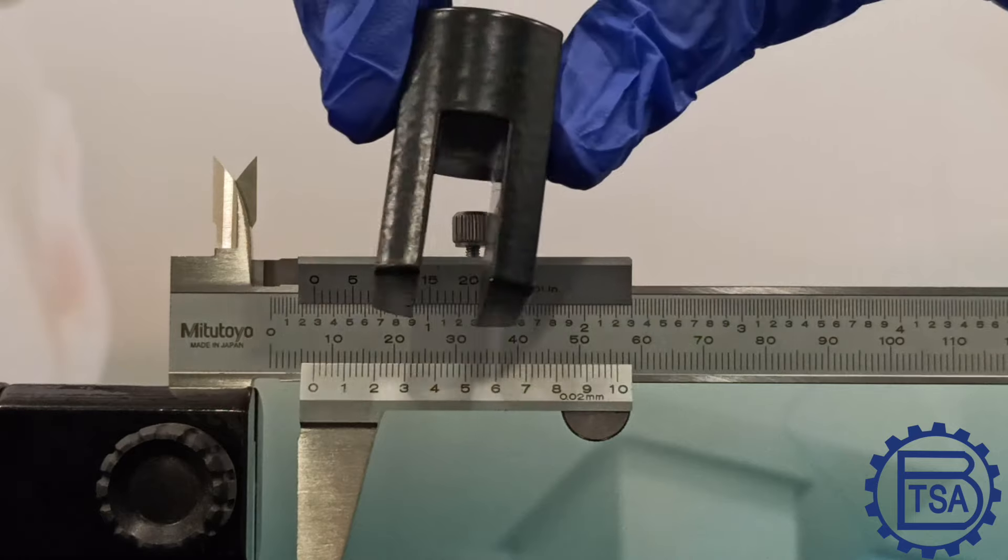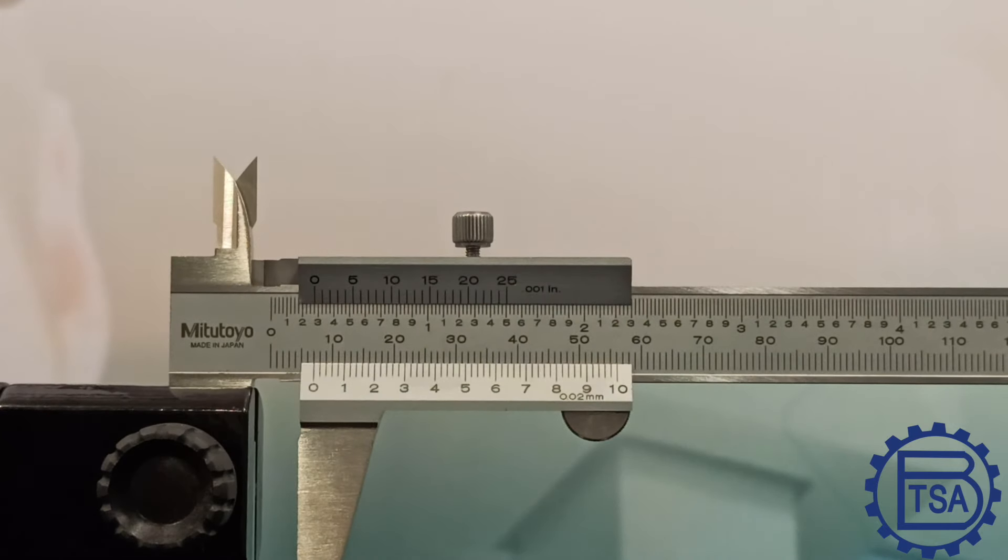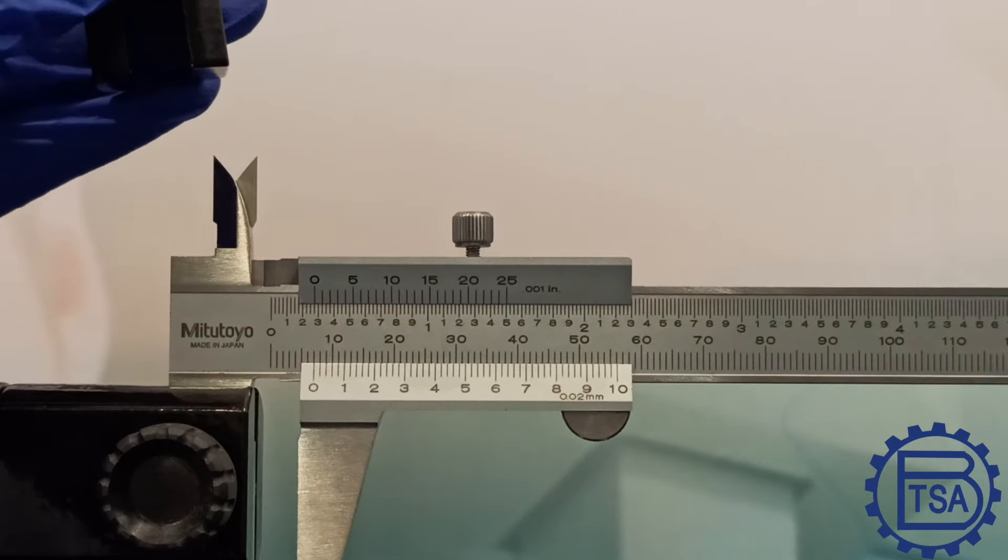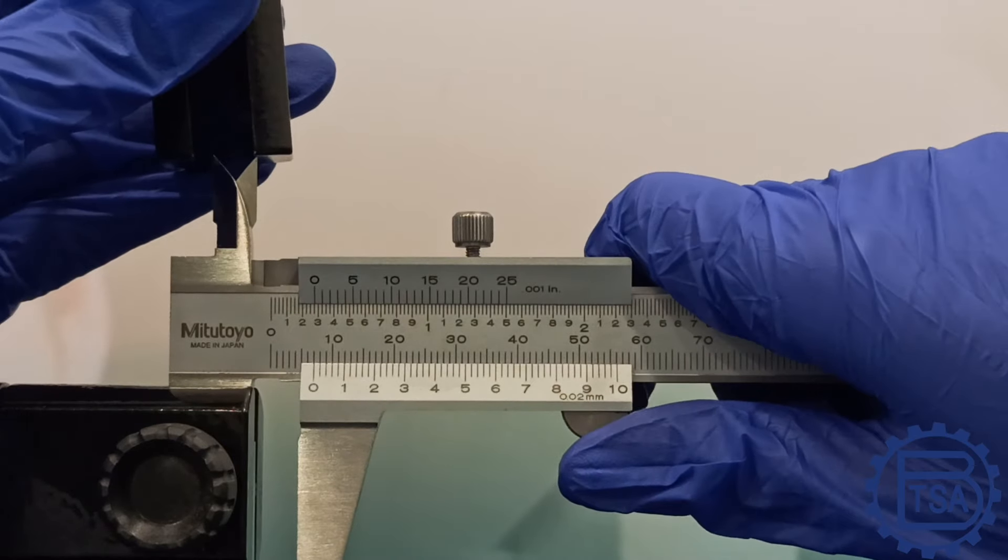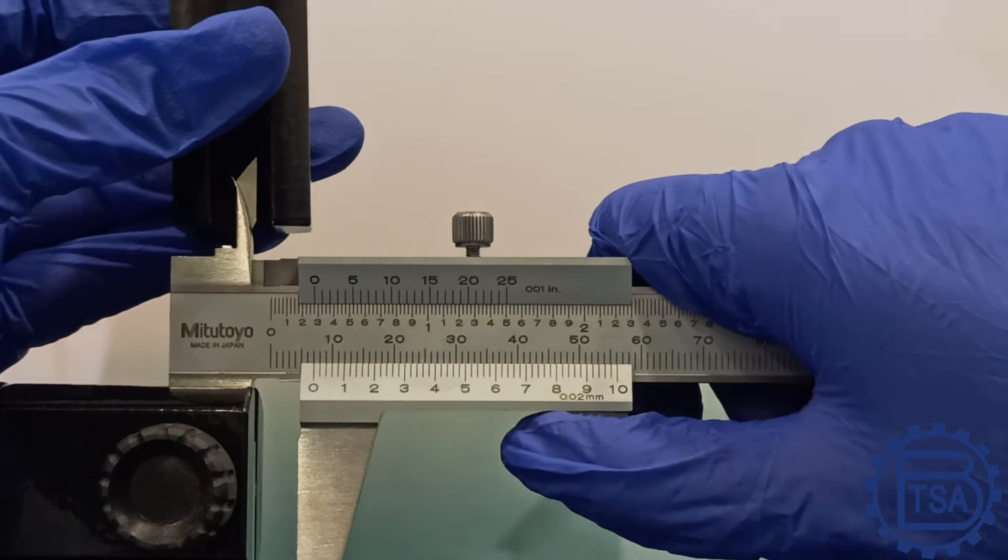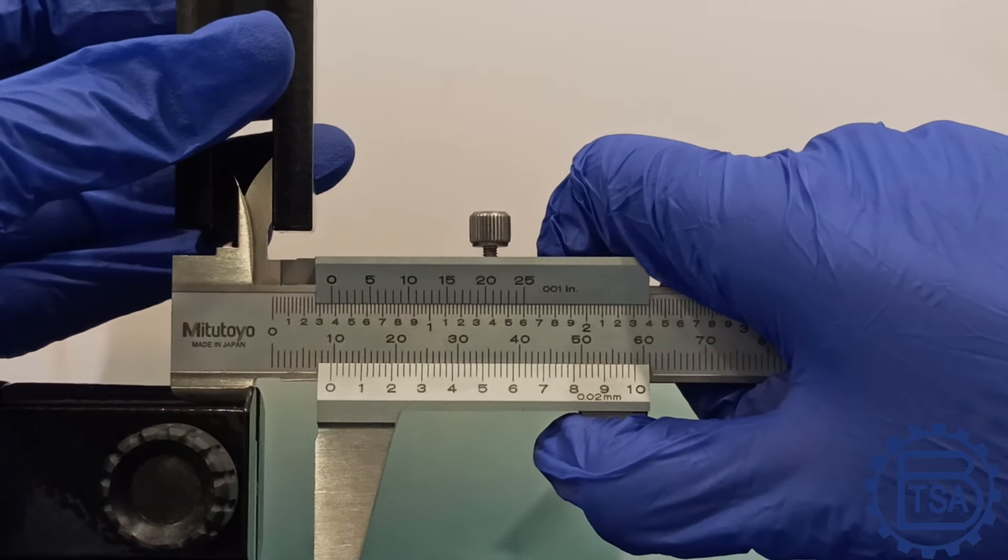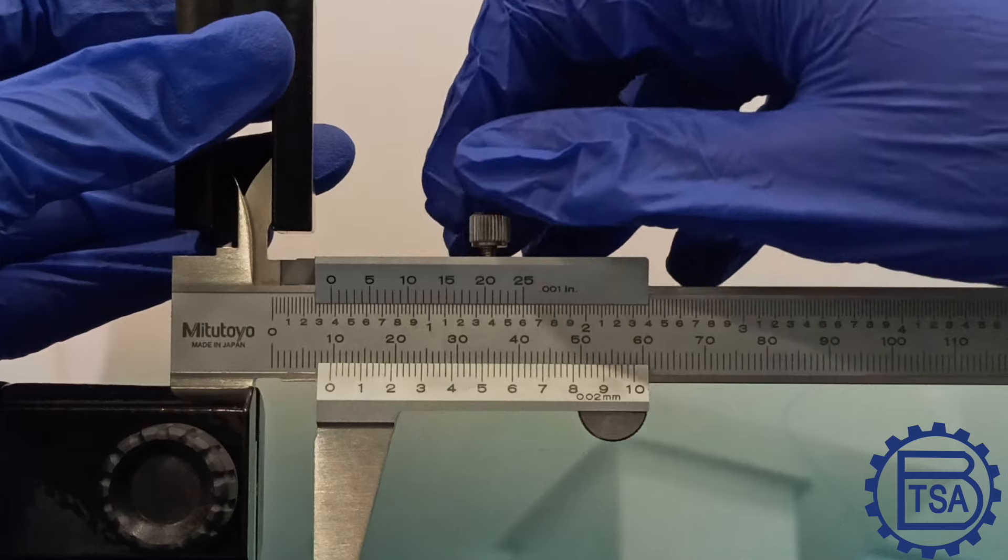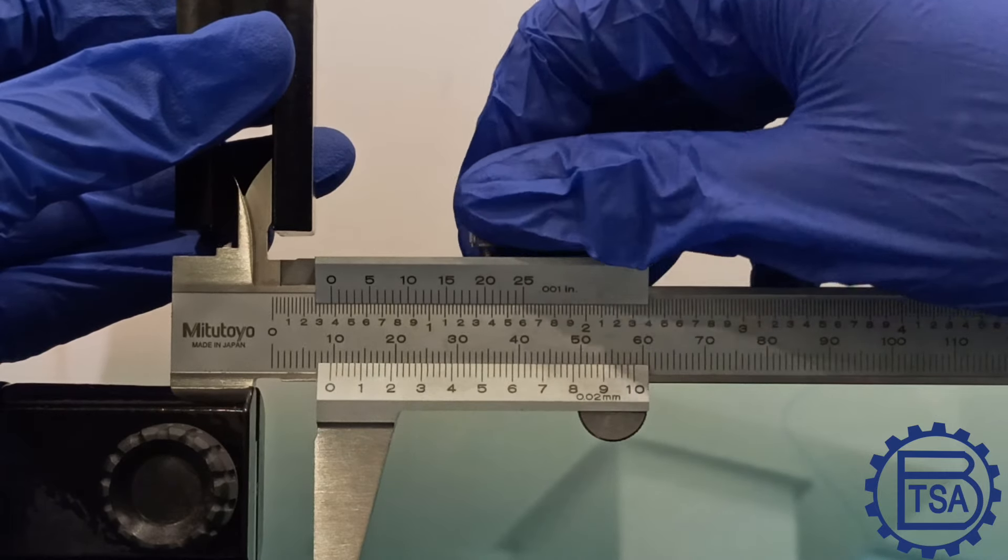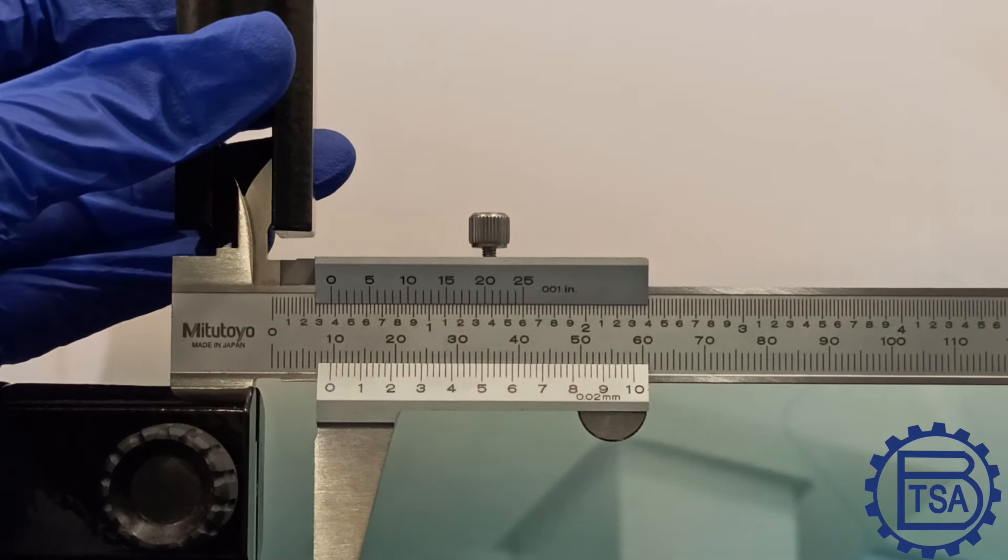Let's now measure the width of this component using the internal jaws. While measuring with the internal jaws, insert the jaw as deeply as possible before measurement. Read the maximum indicated value. Here, the value is 9.52 mm.